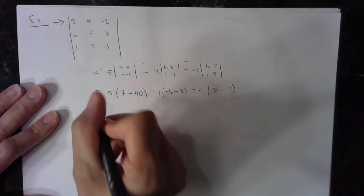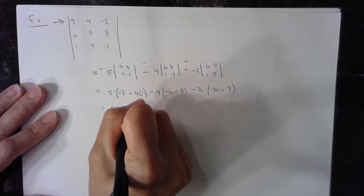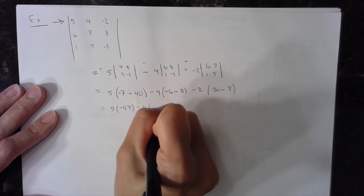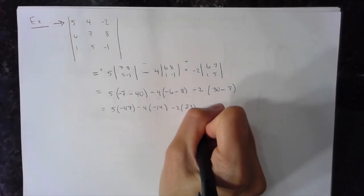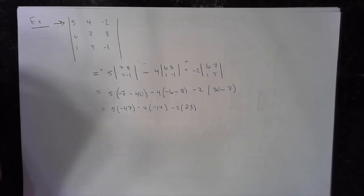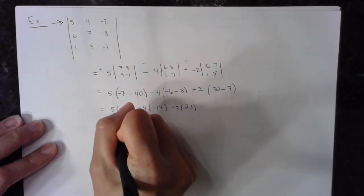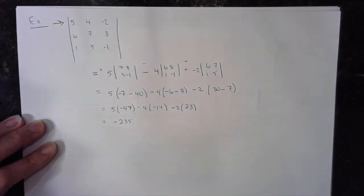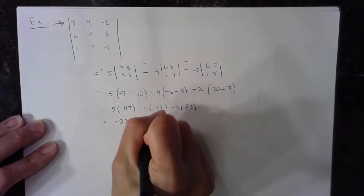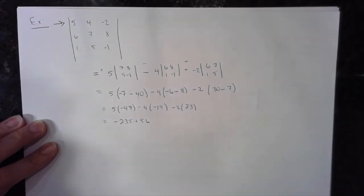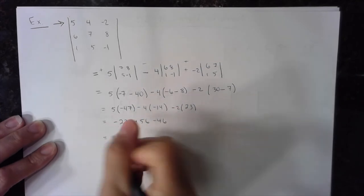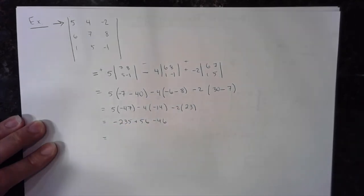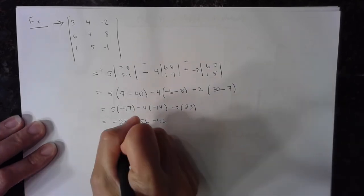Simplify further: 5 times negative 47, minus 4 times negative 14, minus 2 times 23. That gives us: 5 times negative 47 is negative 235, plus 56 (since minus 4 times negative 14 is +56), and minus 2 times 23 is negative 46. When I combine all these together — negative 235 plus 56 minus 46 — I get negative 225. That's the determinant of this 3x3 matrix.